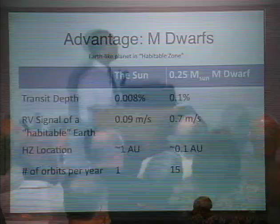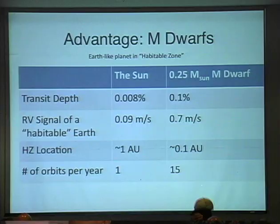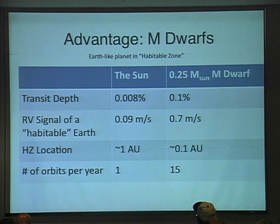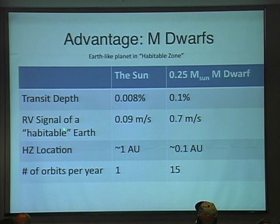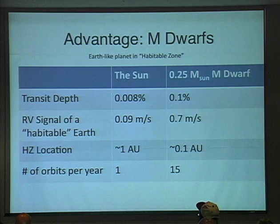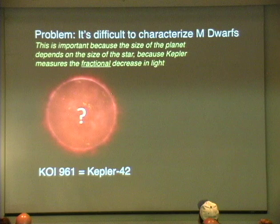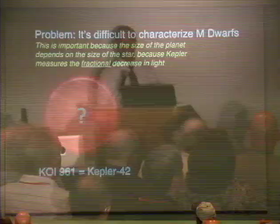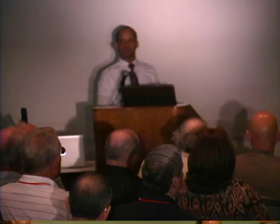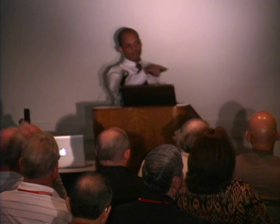Comparing a quarter-solar-mass M-dwarf to the Sun: the transit depth is an order of magnitude deeper, the radial velocity signal of a habitable-zone Earth is about an order of magnitude larger, and the habitable zone location is much closer, meaning that for every year of observing Kepler does, you get to see an order of magnitude more orbits go by. The problem with M-dwarfs, though, is that because they're so unlike our Sun, we don't really have the Sun as a touchstone for understanding their stellar properties. Since transit depth only gives you the ratio of planet radius to star radius, you need to know the star's properties to understand the planet's properties.